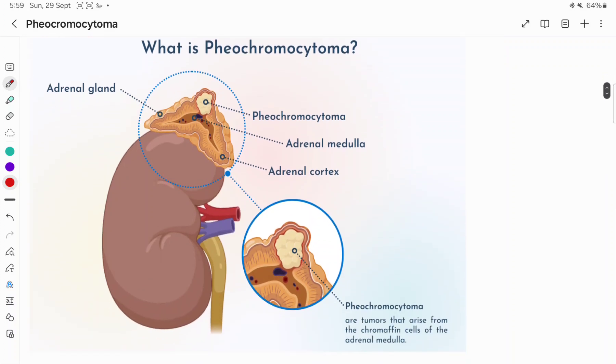You can see the adrenal gland, the outer portion is adrenal cortex, the inner portion is adrenal medulla. In the adrenal medulla, the chromaffin cells are there. The tumors arise from these cells and result in excess secretion of adrenaline. Adrenaline secretion increases.